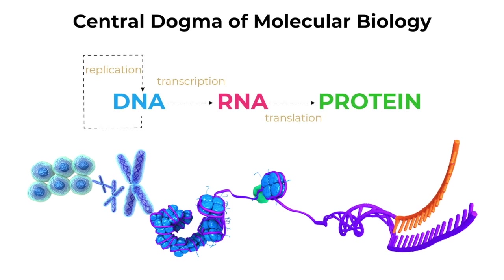The central dogma of molecular biology dictates the flow of genetic information from DNA to RNA and then to protein. In order to create proteins from these genes, RNA copies are made in the nucleus and will be subsequently transported into the cytosol, where proteins are built based on their sequences. For protein coding genes, RNA is made from DNA during a process called transcription, and protein is made from RNA during translation.